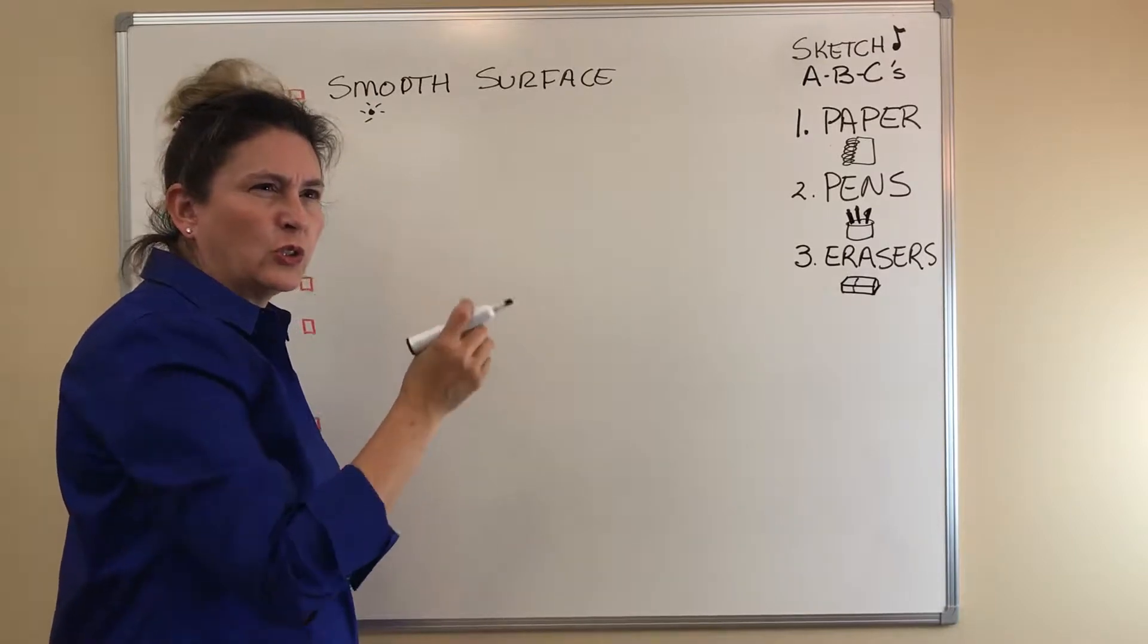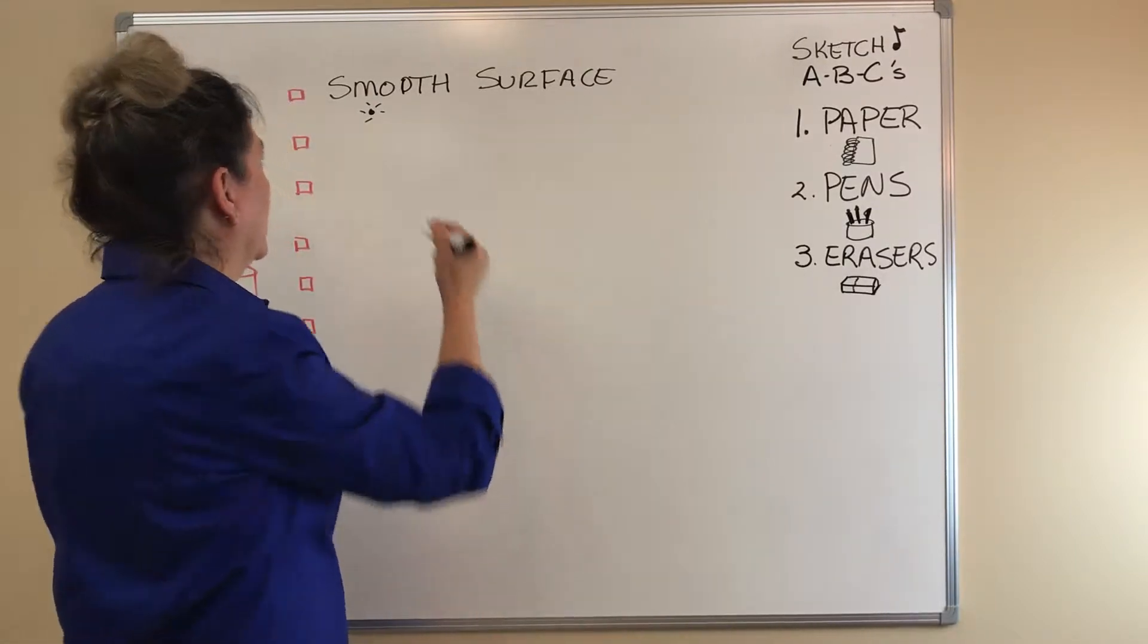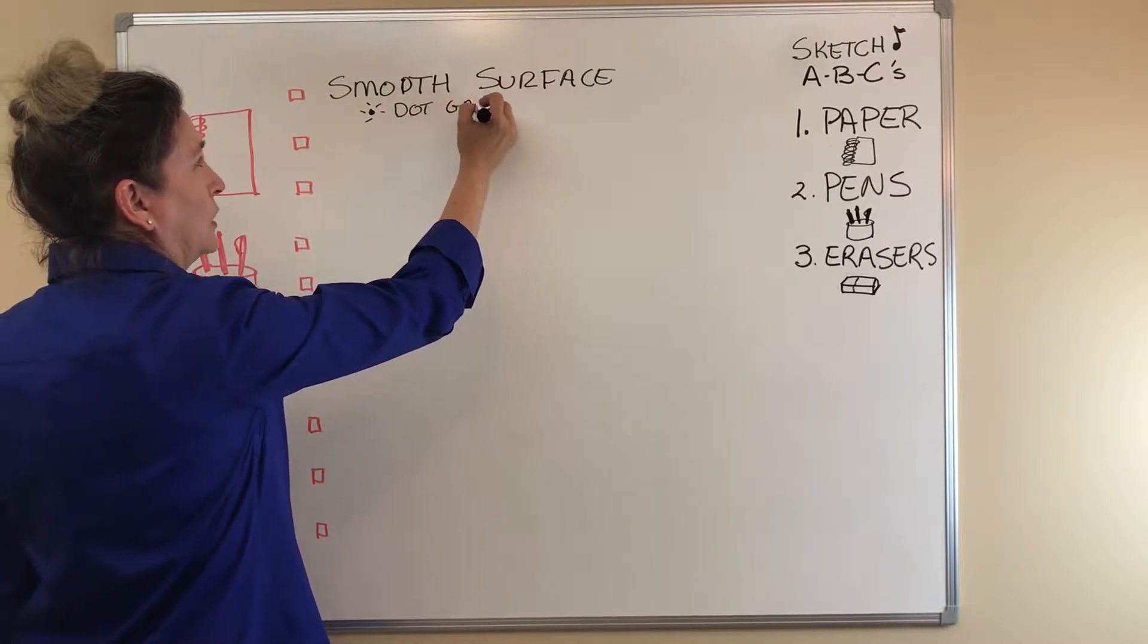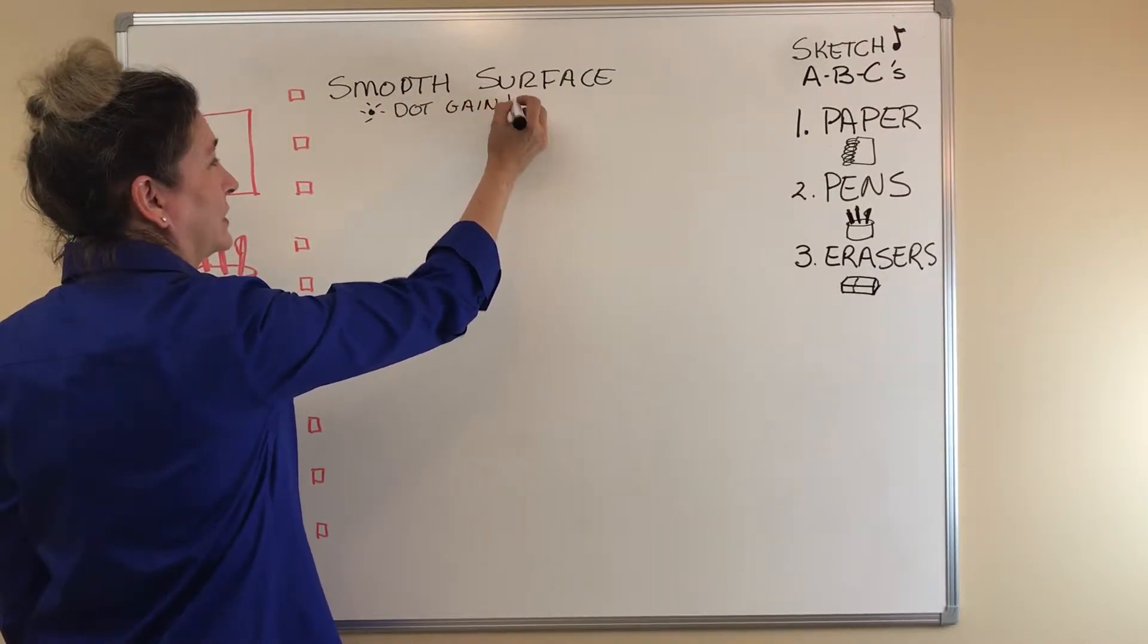You want it to not spread very far because when it does spread, it makes your line look murky. It loses its crispness. It looks kind of smeared. So you want to watch out for dot gain. You want low to none for that.